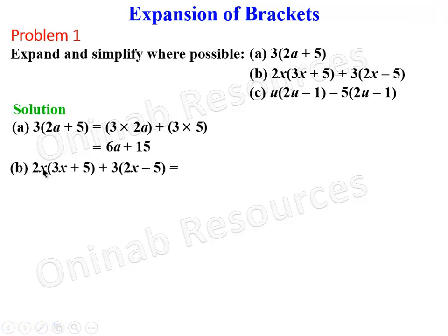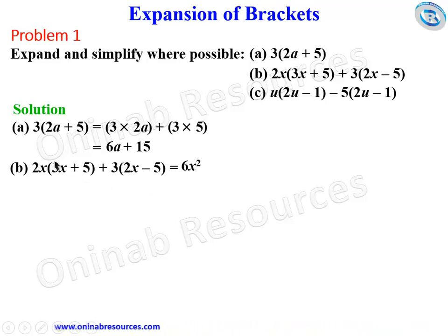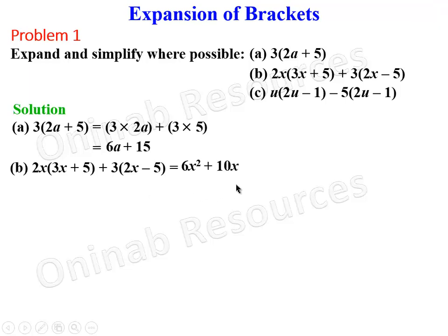For part b, we use 2x to multiply everything inside the first bracket. 2x times 3x gives 6x squared, since 2 times 3 gives 6 and x times x gives x squared. 2x times 5 gives 10x, and the connector is plus. We are done with the first bracket.